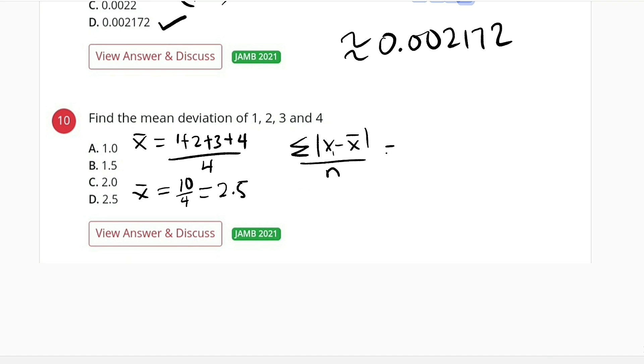So this is equal to 1 minus 2.5 in an absolute form, then plus the second one, 2 minus 2.5, plus 3 minus 2.5, plus last one, 4 minus 2.5 in an absolute form, the whole of them divided by n, and n is 4.